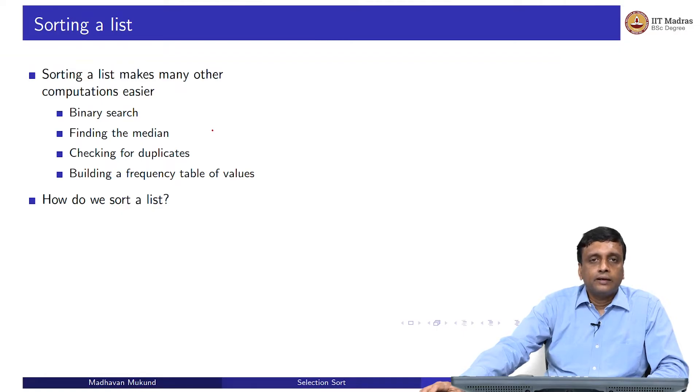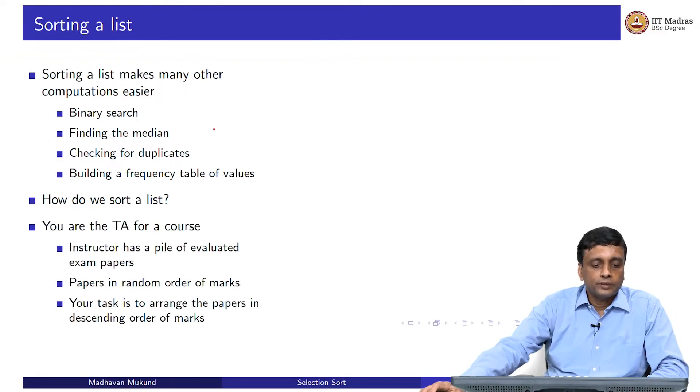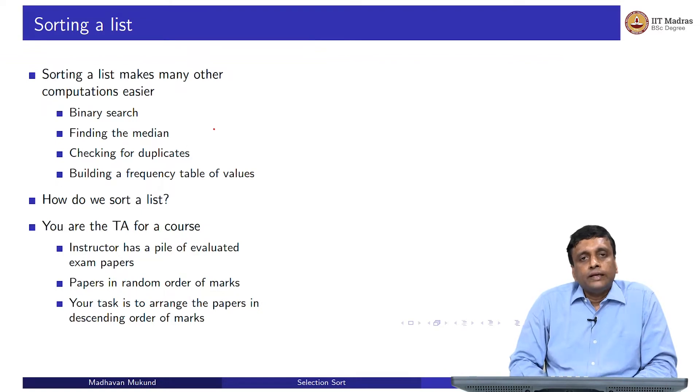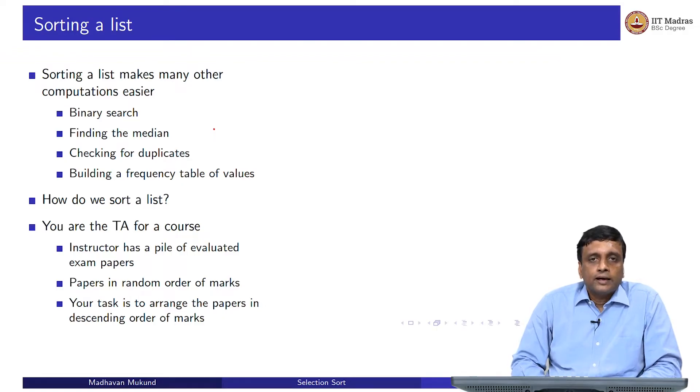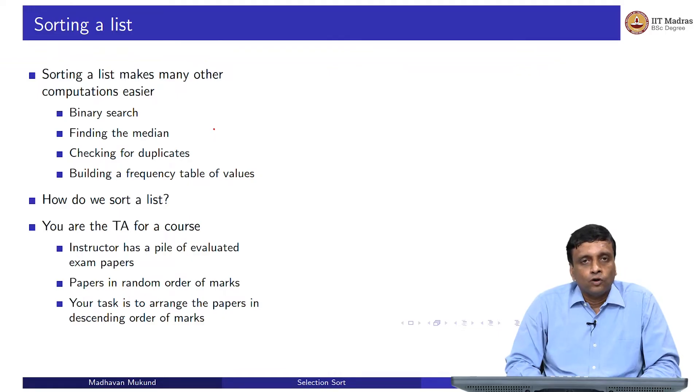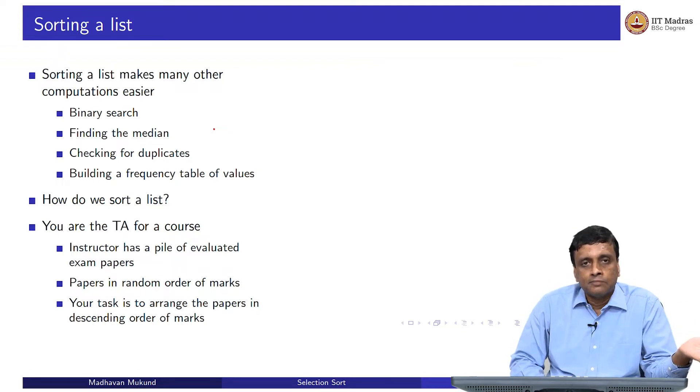That is the question we are going to address in the remaining lectures in this week: how do we sort a list and what is the complexity of sorting. We are going to start with two very intuitive ways of sorting which you would typically do when you are asked to do something by hand. Let us look at a very practical problem. Supposing you are the teaching assistant for a course and the instructor has graded the exams. The exams are graded in the order in which they came to the instructor. There is no particular logic or correlation between the order in which the exams are and the marks that the students have.